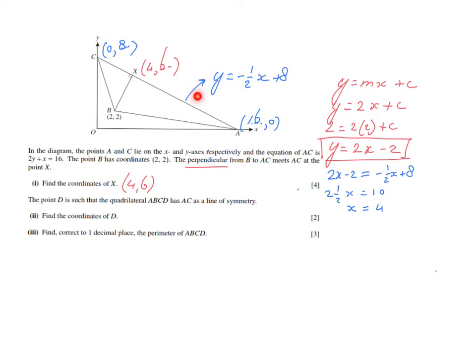Moving on. The point D, there's no point D yet. The point D is such that the quadrilateral A, B, C, D has AC as a line of symmetry. So A, B, C and that point D should be somewhere over there as I'm sure you will agree with me. So let me just sketch it. I'll put a D there. And then we have quadrilateral ABCD where AC is a line of symmetry, which is a beautiful kite, of course. Now they're asking me to find the coordinates of D.